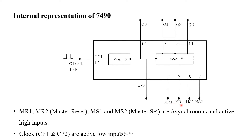The clock is provided individually for these two counters: CP1 belongs to the mod 2 counter and CP2 belongs to the mod 5 counter. Both clock pulses are active low in nature. There are four outputs: Q0, Q1, Q2, and Q3.